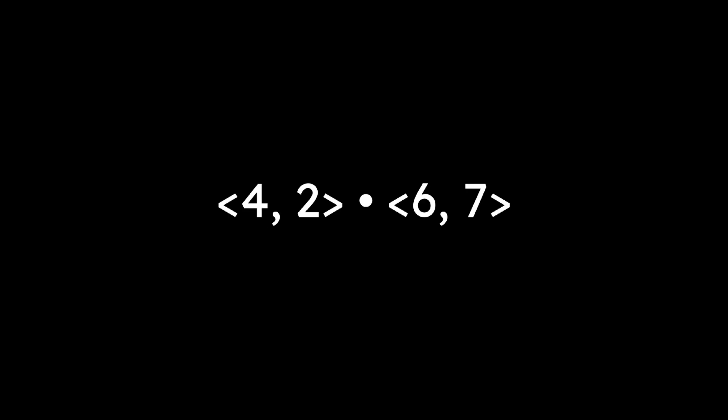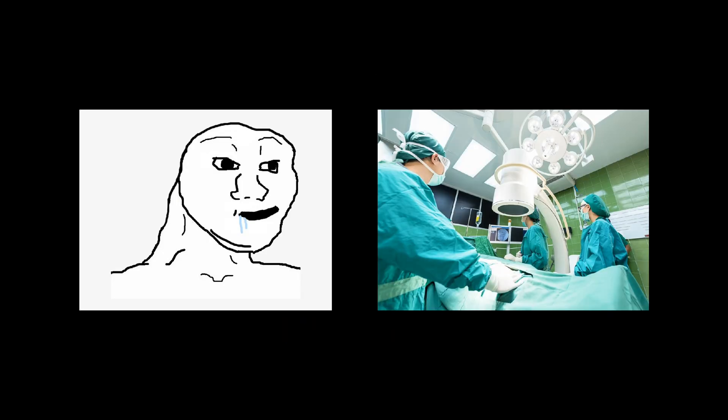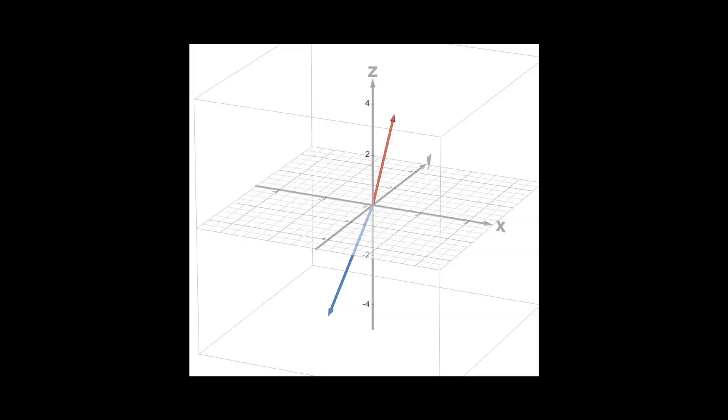The dot product is a way to multiply two vectors, and the result is a number that indicates how much the two vectors point in the same direction. To compute the dot product of two vectors, multiply their corresponding entries and add the results. The cross product is a special operation that only works for vectors in three dimensions.